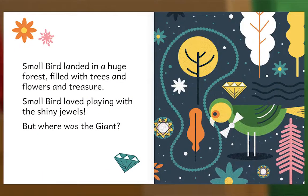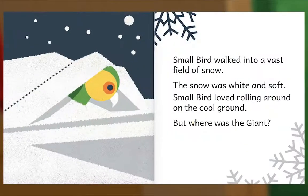Small Bird landed in a huge forest filled with trees and flowers and treasure! Small Bird loved playing with the shiny jewels. But where was the giant? Small Bird walked into a vast field of snow. The snow was white and soft. Small Bird loved rolling around on the cool ground — but where was the giant?